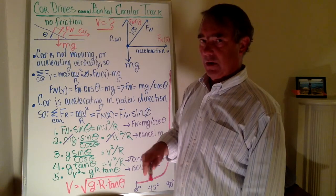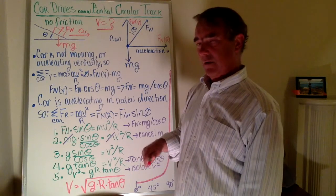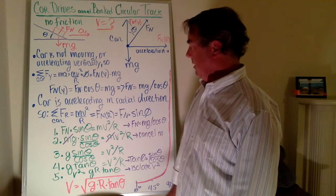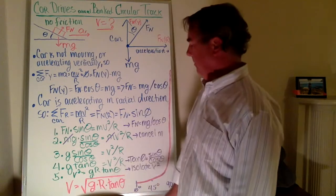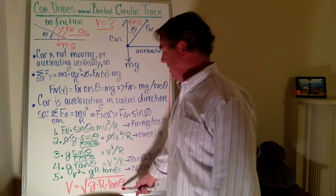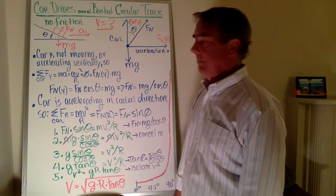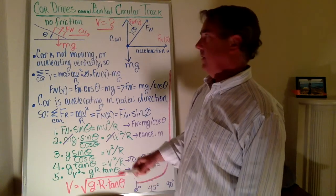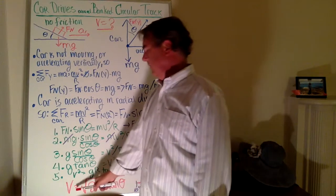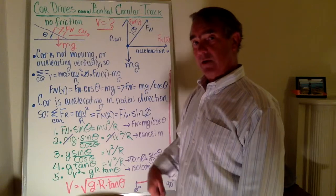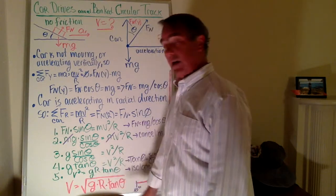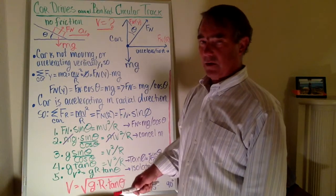The process by which this problem is solved is fairly straightforward, so it's a good example of an approach for problems that appear a little bit more complex. What really interests me about this question is the answer: design velocity equal to the square root of gravity times radius times the tangent of the banking angle. The consistency of the square root of gravity times radius being part of the answer is something I found kind of interesting, which is why I'm doing these videos.